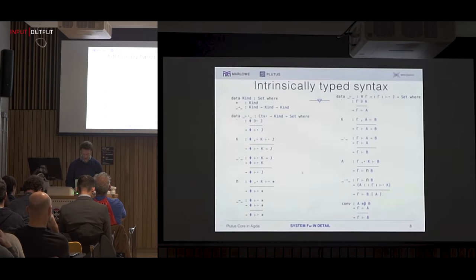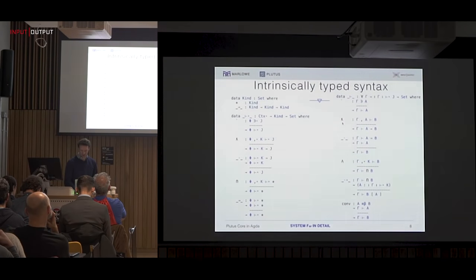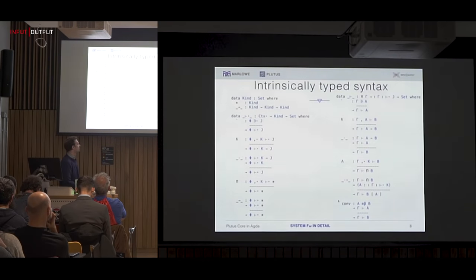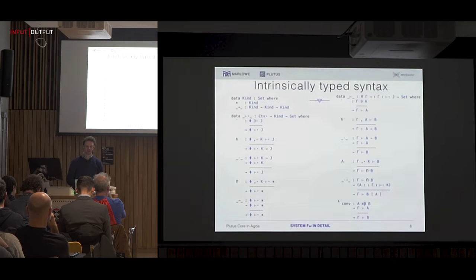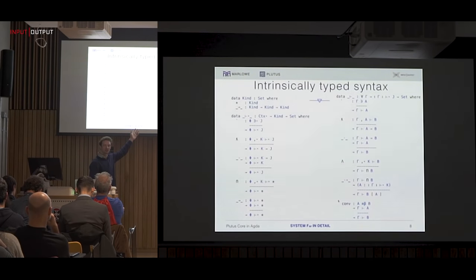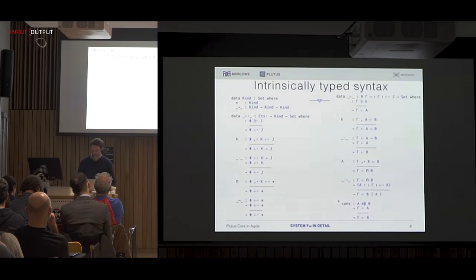In the term syntax, indexed over a context and a type, we have variables, lambda, application, big lambda, and instantiation. And then there's this rather annoying thing called the conversion rule. We need this because we have computation at types: you might have types that are really the same — one is just a beta reduction away from the other — and we want to make sure those things are treated as the same, otherwise the system won't work. So the conversion rule appears as a syntactic constructor in this presentation, which is the standard presentation of System F Omega.